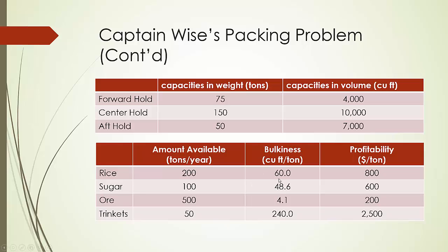We also have information about the bulkiness of each of the four commodities. For example, one ton of rice has a volume of 60 cubic feet, and one ton of sugar has a volume of 48.6 cubic feet, and so on. The unit profitability of each commodity is $800 per ton for rice, $200 per ton for iron ore, and $2,500 per ton for trinkets.